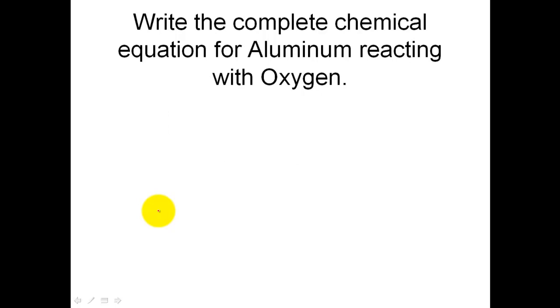Okay guys, here's the example we're going to start off with. We're going to write the complete chemical equation for aluminum reacting with oxygen. Let's pull out of the problem what's going on. We've got aluminum, and it is reacting with, reacting is a plus sign, with oxygen.